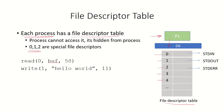Zero, one, and two are the special file descriptors. File descriptor 0 always points to standard input, usually the keyboard. File descriptor 1 always points to standard output, most often the terminal screen. File descriptor 2 always points to standard error — that is, where error status is sent. Often this also points to the standard output terminal screen.